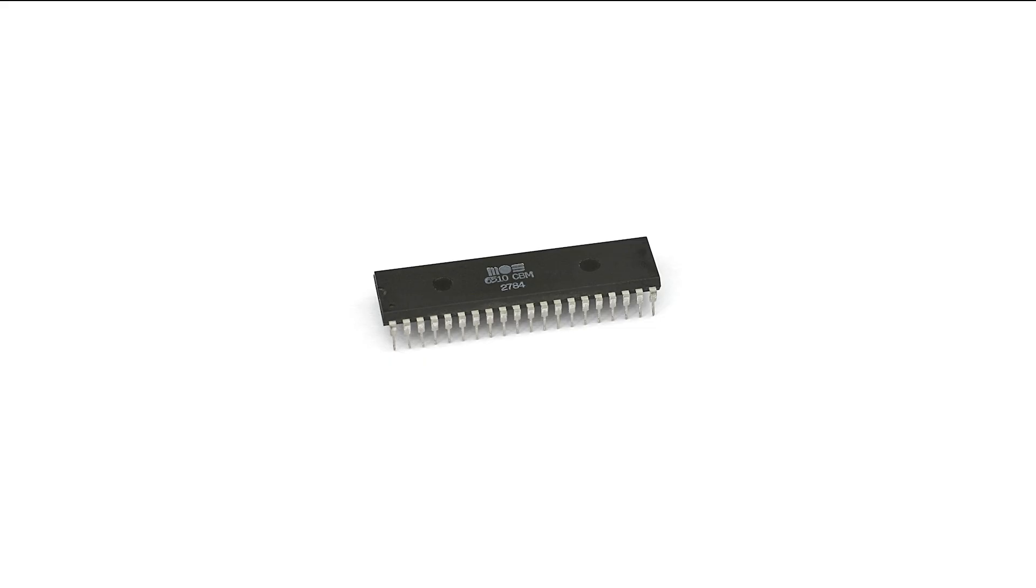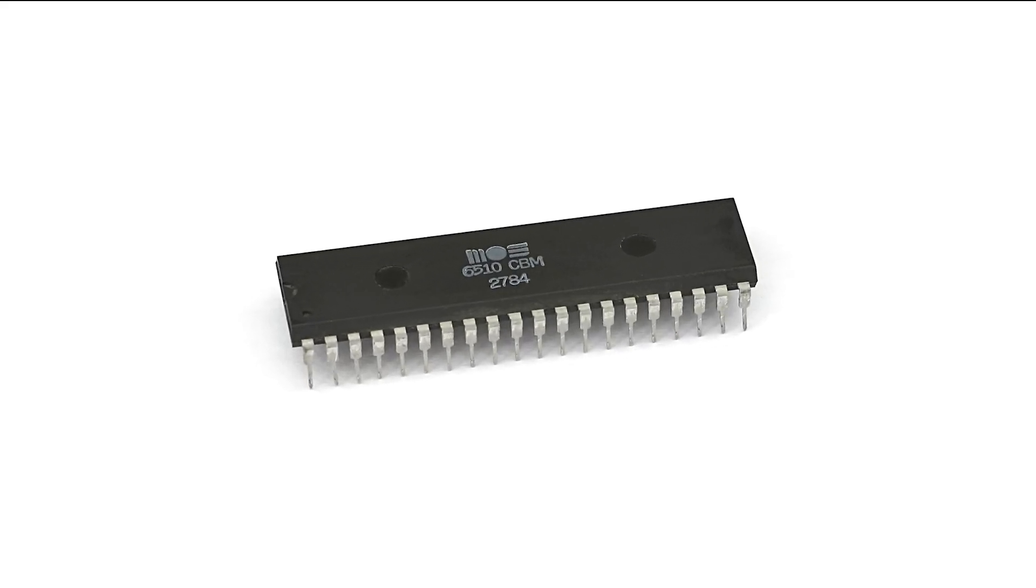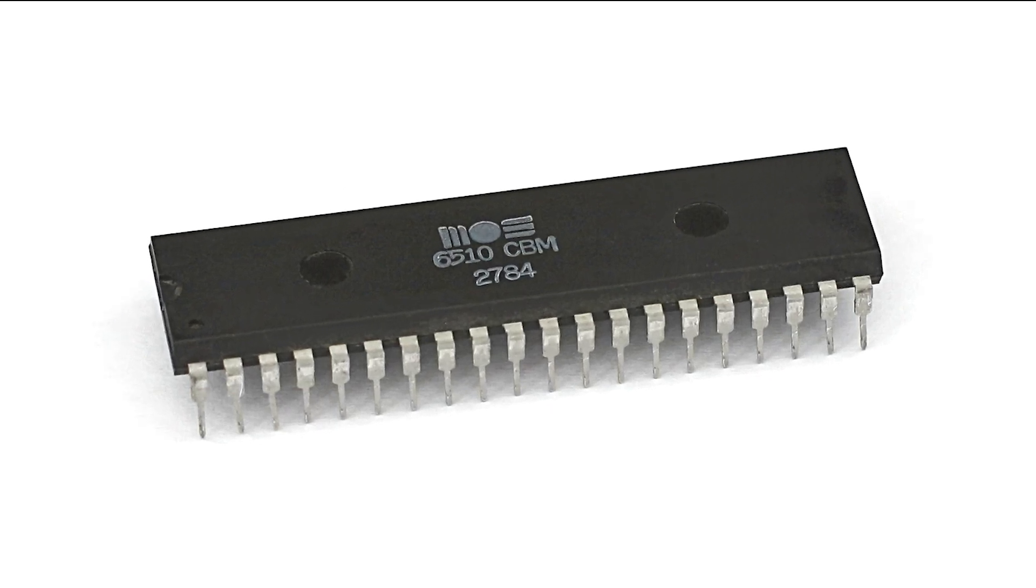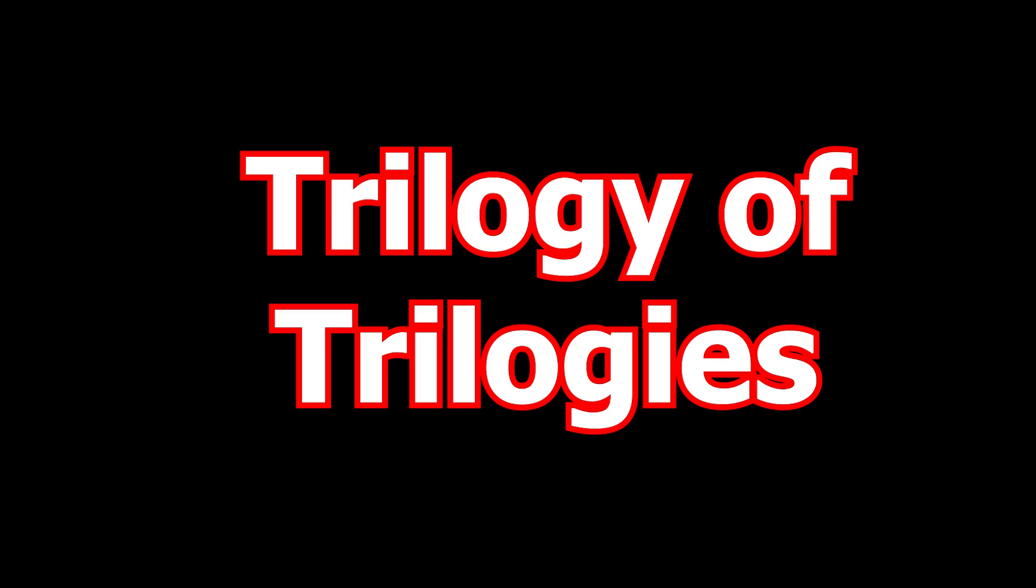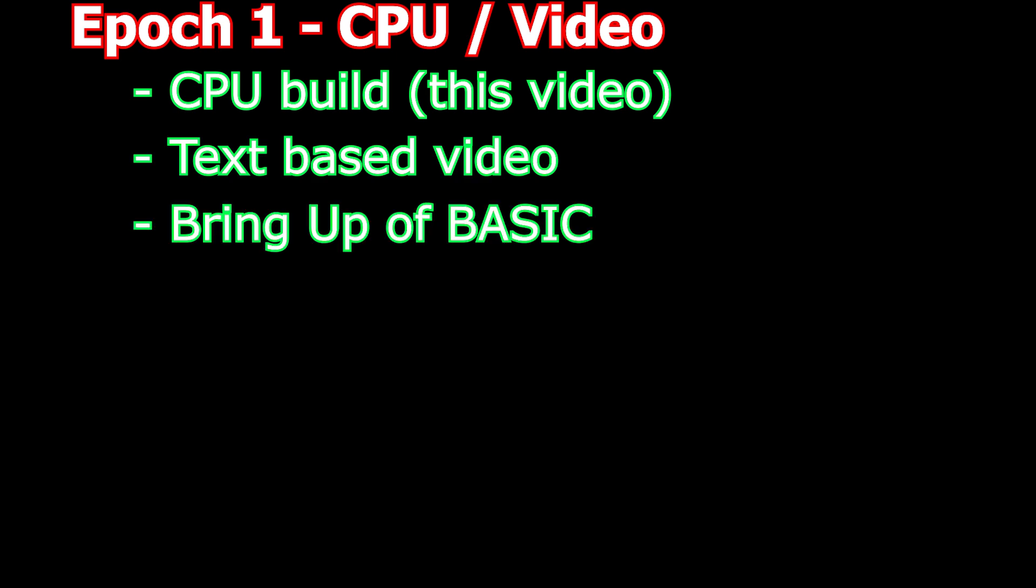The Commodore 64 uses the 6510 microprocessor, which is based on the famous 6502. I will make the difference clear in video 3 of this series, but for now, I'll use the term 6510 and 6502 interchangeably. I'm going to build this Commodore 64 as a trilogy of trilogies. In Epic 1, we'll have the CPU build, which is this video. Then we'll work on text-based display, and the bring-up is a simple Commodore 64 able to run basic.